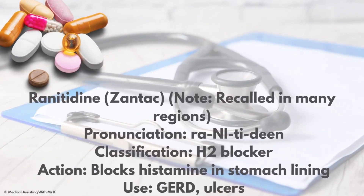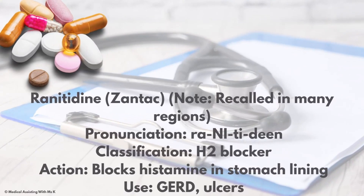Zantac — the generic is ranitidine. Classification: H2 blocker, which is a histamine receptor involved with releasing acid into the stomach. Action: it blocks histamine in the stomach lining. Use: GERD and ulcers.